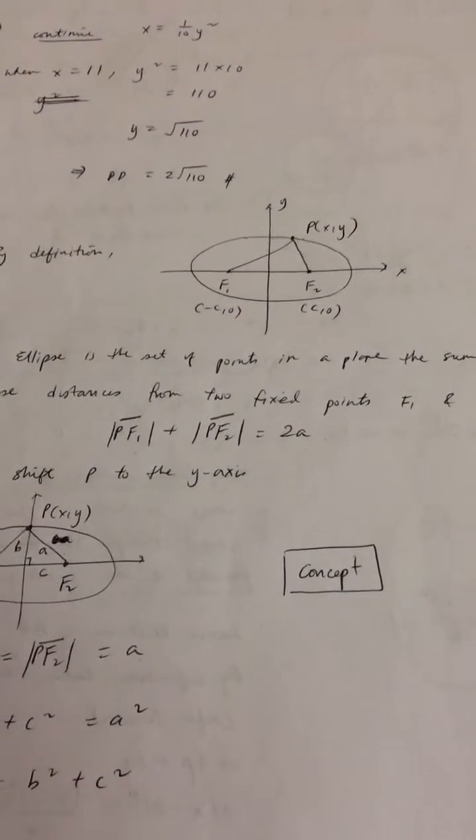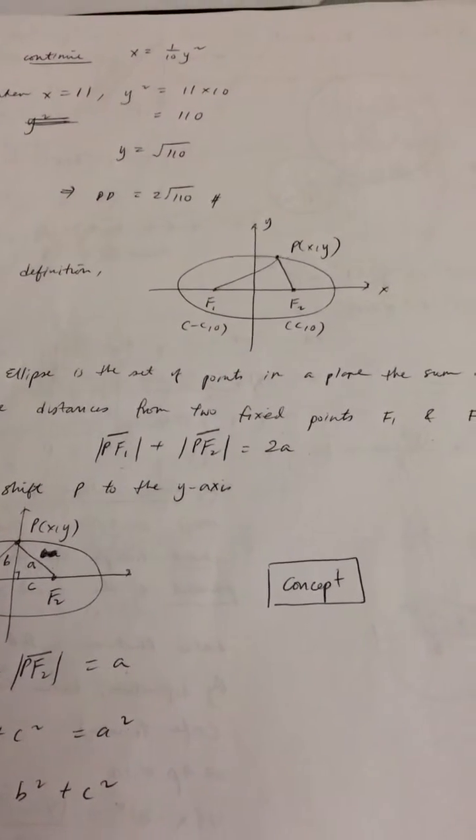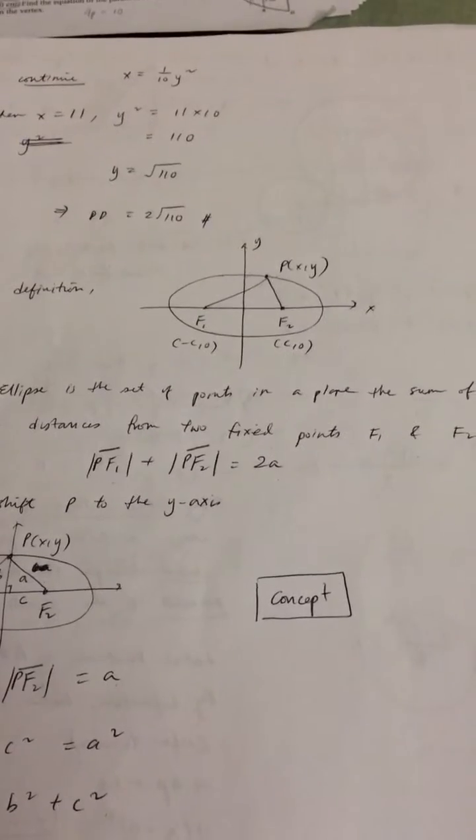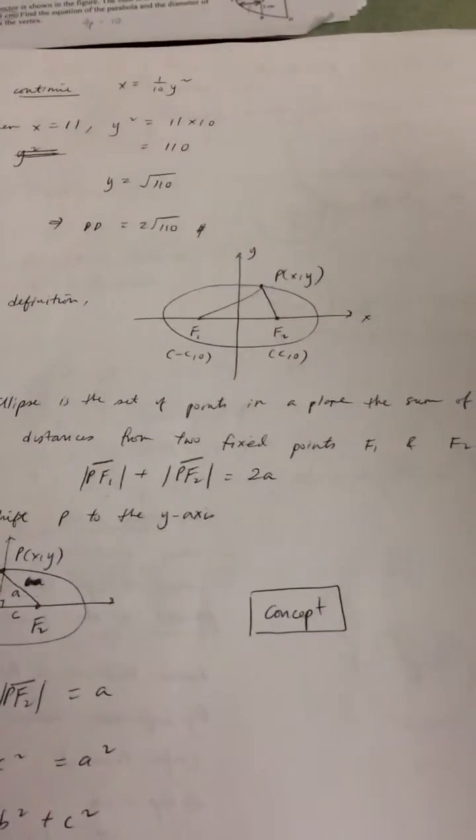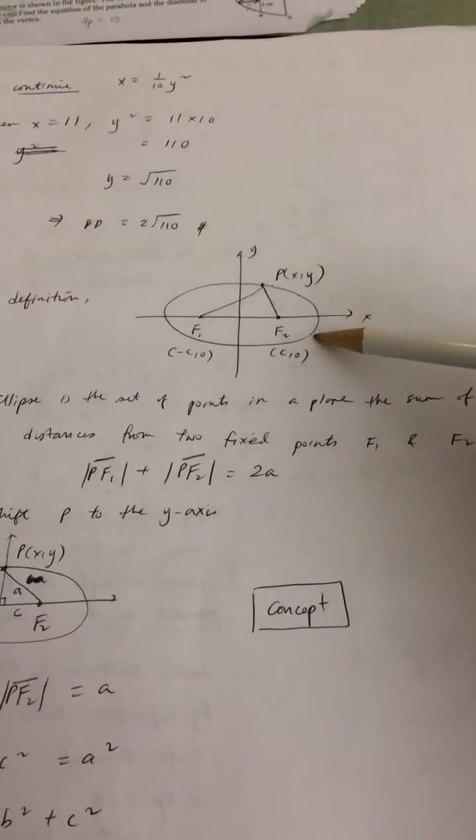For question 4, you're supposed to find the relationship A² = B² + C² for an ellipse. This is the diagram for the ellipse.